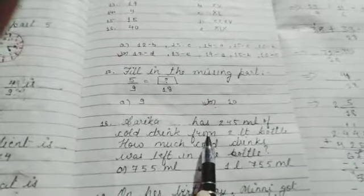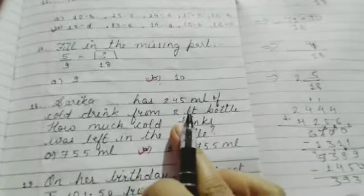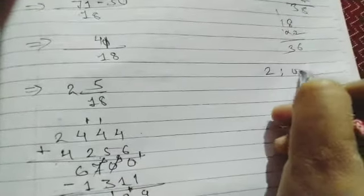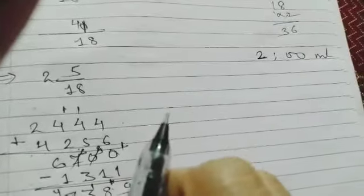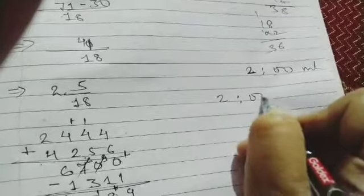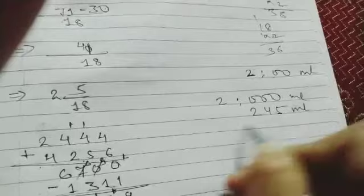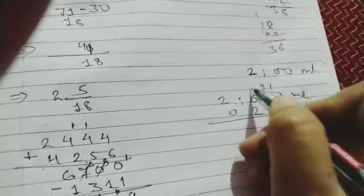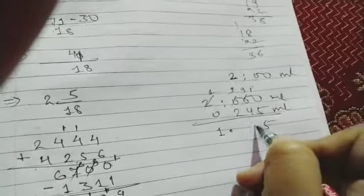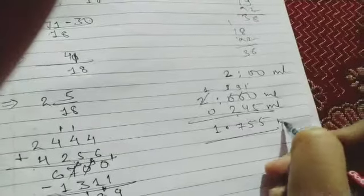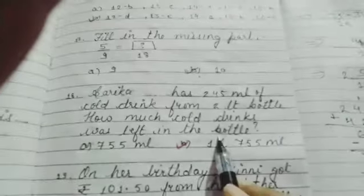Sarika has 250 ml of cold drink from 2 litre bottle. How much cold drink was left in the bottle? So total cold drink was 2 litres. So 2 litres means 2000 ml. Now 245 ml was used. So it will be 10, 9, 9 and 1. So 10 minus 5 is 5. 9 minus 4 is 5. 9 minus 2 is 7. So answer is 1755 ml will be left. This is our answer.